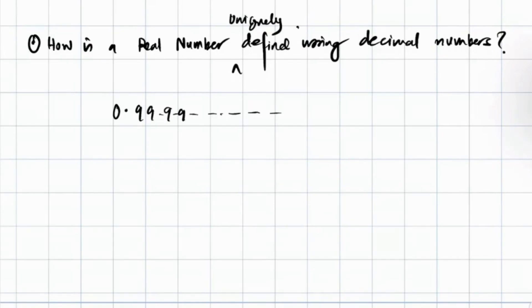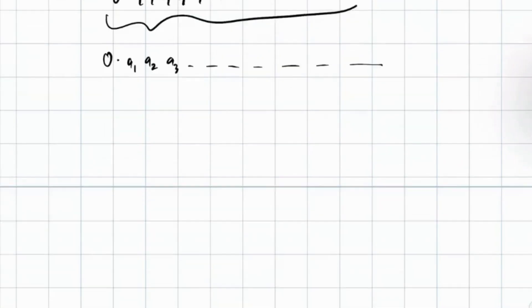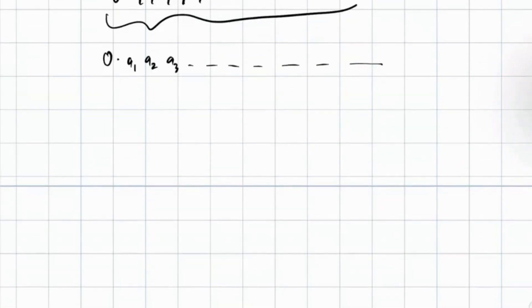How is a real number uniquely defined within decimal numbers? Very simple. Can someone tell me what is 0.999999...? If you say 0.a1 a2 a3... continuous, right? What is the meaning of this? How do you write it mathematically? a1 is an integer between 0 and 9. What does 0.1 mean? 1 by 10. What does 0.01 mean? 1 by 10 squared, right?